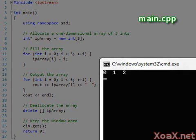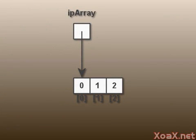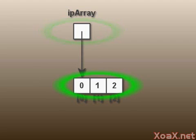Executing our program, we see the integers 0, 1, and 2 printed, as we would expect. Let's look at the memory layout for this allocation. In this program, ipArray is a pointer that points to the beginning of the array of allocated ints. Note that the pointer itself is not dynamically allocated — only the array of integers is. This one-dimensional case is fairly straightforward.